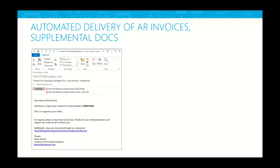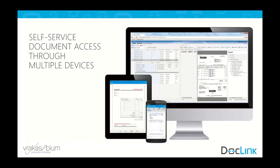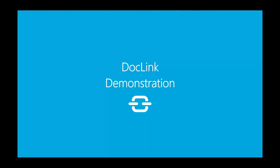Next is AR invoices and supplemental documents, which Igor will touch on in more detail. As mentioned, if we want to attach documents together — in this case an invoice and a purchase order — with the details, this will be automatically routed out to the customer or vendor. You'll see the attachments would have been sent out with a pre-configured email body with the details, giving customers that self-service access across multiple devices and touch points.